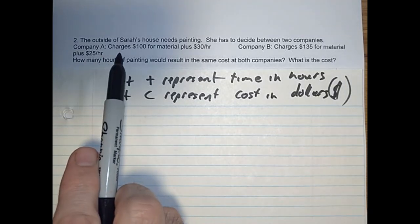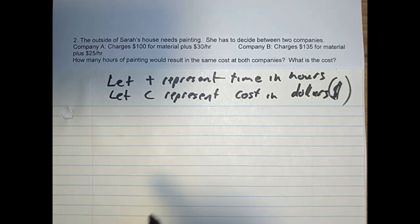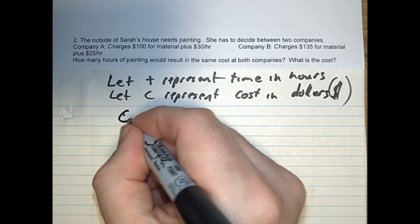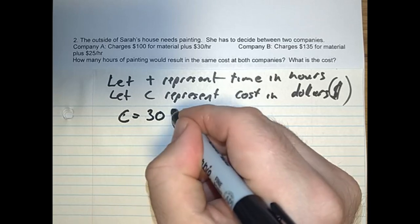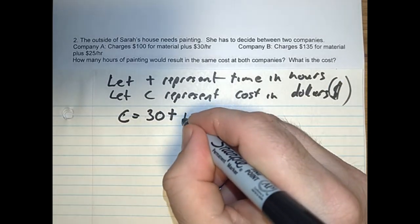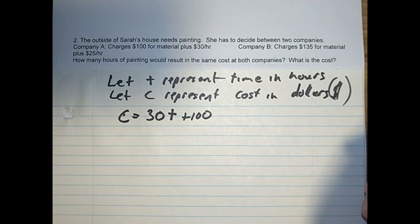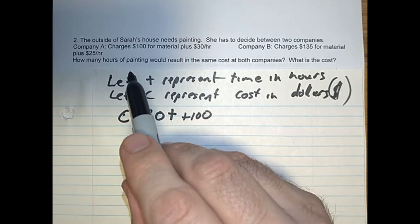Okay, Company A. Let's come up with the equation. Cost is $30 an hour, so 30T plus the $100 at the start.